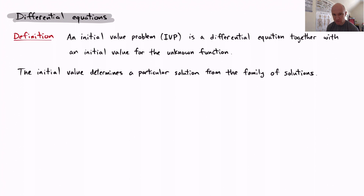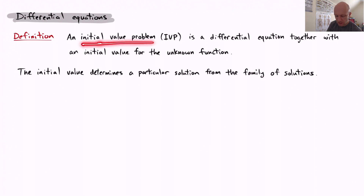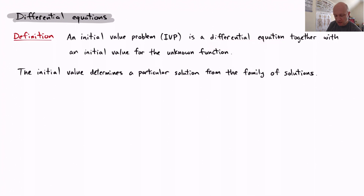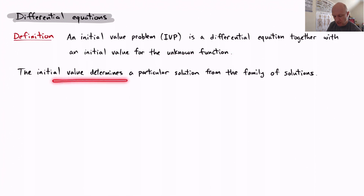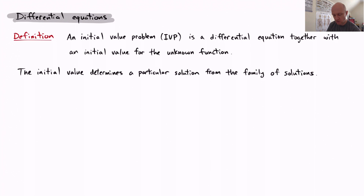I'd like to talk about one more topic: initial value problems. We've been finding general solutions — big families of solutions parameterized by some constant. An initial value problem, or IVP, is a differential equation together with an extra piece of information: an initial value for the unknown function. That initial value pins down one particular solution out of the general solution, or from the family of solutions to the differential equation.